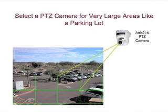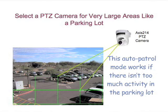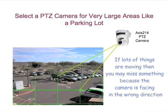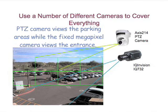You can select a pan-tilt zoom camera for very large areas like a parking lot. With a pan-tilt zoom camera, you can automatically step through predefined positions and sequentially look at small sections of a large parking lot. It records video if it sees motion. This Auto Patrol mode works if there isn't too much activity in the parking lot. If lots of things are moving, you may miss something because the camera is facing in the wrong direction.